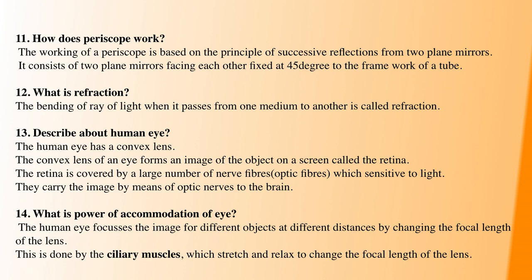Next question: describe the human eye. Our eye contains a convex lens. The convex lens captures what we see and forms an image on the screen called the retina. The retina has a large number of nerve fibers that are very sensitive to light. These nerve fibers send the information to the brain. So the human eye works with a convex lens.